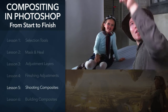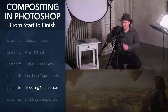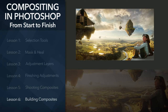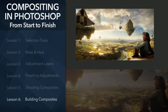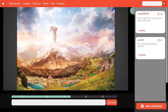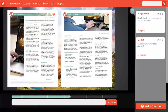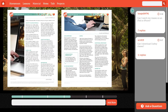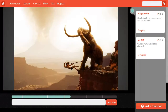Then we'll get behind the camera and learn how to shoot an individual image for a larger composite. Finally, we'll bring together everything you've learned to complete an otherworldly and totally surreal image. In addition to this video content, in the class materials you'll find all the images you need to follow along, and you'll also find some great resources I've picked out for you.